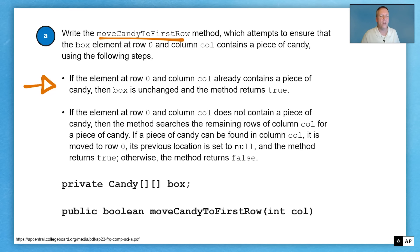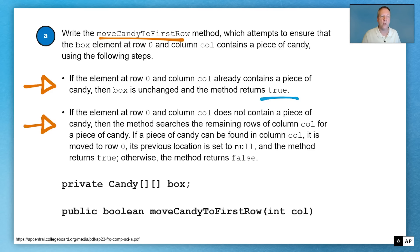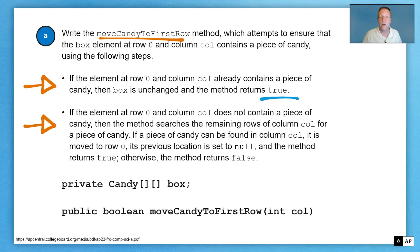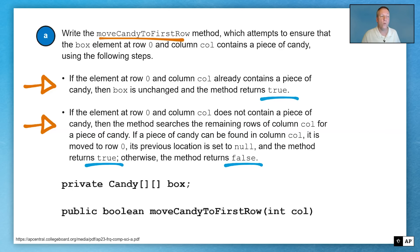Here's the algorithm. If the element at row zero and column col already contains a piece of candy, the box is unchanged and this method returns true. But if the element at row zero and column col does not contain a piece of candy, the method searches the remaining rows of column col for a piece of candy. If a piece of candy is found in column col, it is moved to row zero, the previous location is set to null, and this method returns true. Otherwise, the method returns false. The box is a 2D array of candies, and this method returns a boolean.